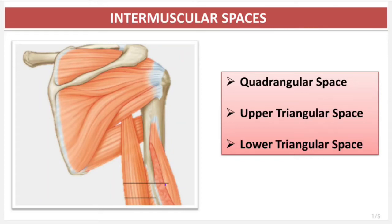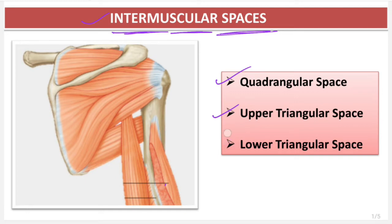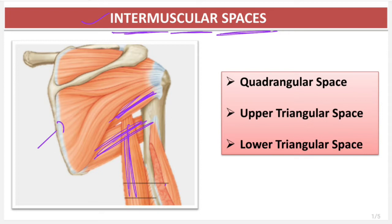In today's video we are going to learn about the intermuscular spaces. The word intermuscular means there are some muscles, and in between the muscles you will find some spaces or gaps — that is known as the intermuscular spaces. The spaces we have to identify are the quadrangular space, upper triangular space, and the lower triangular space. In this picture you can see the muscles and the bone, and in between the muscles you will find out this type of gap.